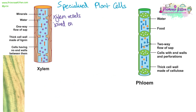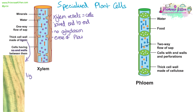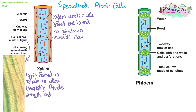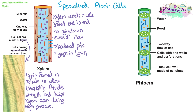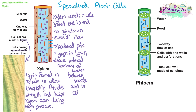Xylem vessels are made of specialised cells joined end to end. They have no cytoplasm, allowing water to flow easily as a continuous column moving up through the tube. The cell walls are strengthened with lignin, which forms in spirals to allow the plant some flexibility in the stems and branches. Lignin is a woody substance that provides strength for the tubes and keeps the xylem vessels open during the high pressure caused by transpiration. There are also bordered pits — gaps in the lignin — which allow lateral flow of water between xylem vessels and out of the xylem into cells.